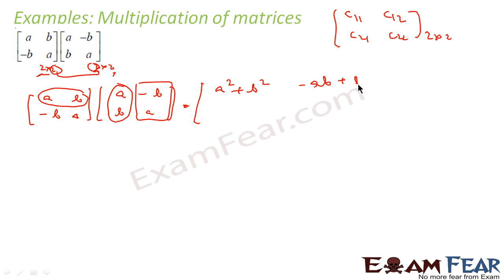Similarly for c21, take the second row and multiply with the first column: you get minus b into a, minus ba, plus a into b, ab. For c22, second row, second column: that is minus b into minus b, plus b squared, plus a into a, a squared.